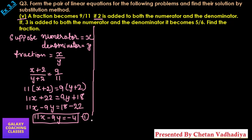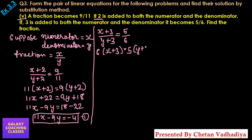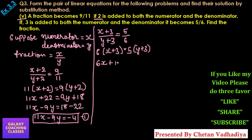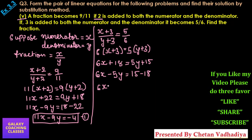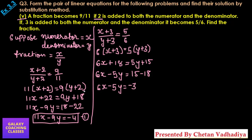For the second equation, they told that if we add 3 to both numerator and denominator — (x + 3) by (y + 3) — the answer becomes 5 by 6. Again doing cross multiplication: 6 into (x + 3) equals 5 into (y + 3), giving 6x + 18 = 5y + 15. Rearranging, 6x minus 5y equals minus 3. This is equation number 2.